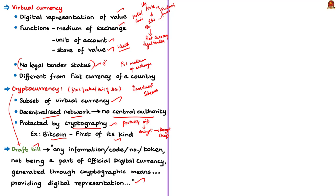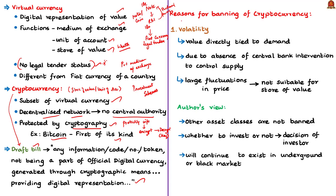Cryptocurrency functions as a store of value, a unit of account, and can be used in financial transactions or investment. One key reason given by the committee for banning cryptocurrency is its volatility — cryptocurrencies are extremely volatile because their value is directly tied to demand, due to the absence of central bank intervention to control supply. Large price fluctuations prevent cryptocurrencies from being a suitable store of value. However, the op-ed authors argue that volatility is not a good reason to ban cryptocurrencies because other asset classes are also volatile.